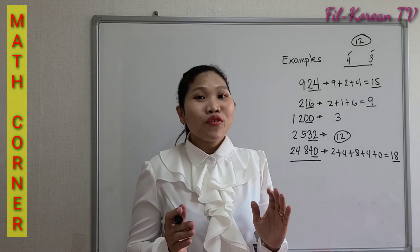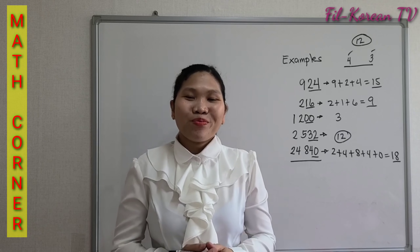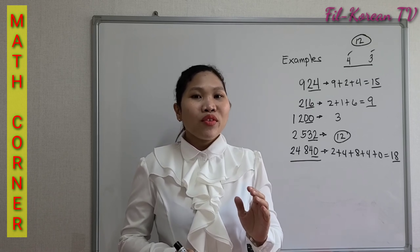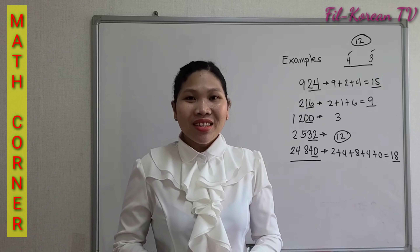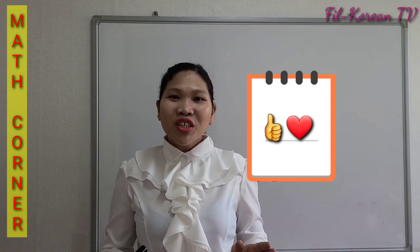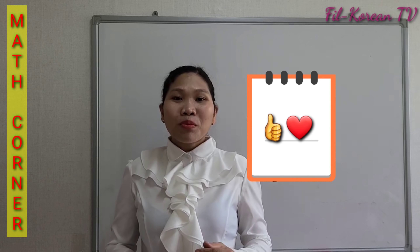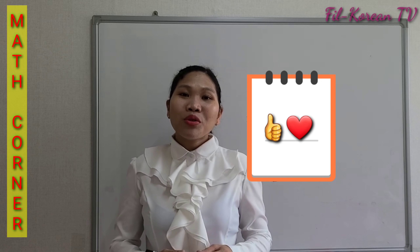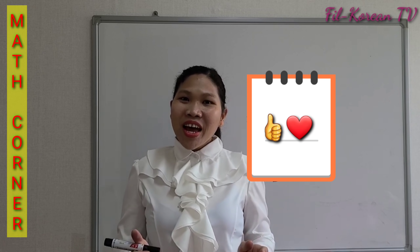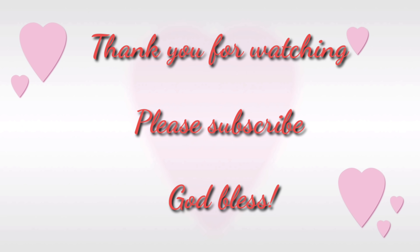You need to apply the divisibility rule of 4 and 3 to determine whether a number is divisible by 12. If you know all these rules, you can easily tell whether a number is divisible by a number from 2 to 12 just by looking at it, without performing the division operation. Thank you so much for watching. Please subscribe and click the notification bell to be updated on the next video. I hope you enjoy learning with me. Thanks again. See you next time. God bless.